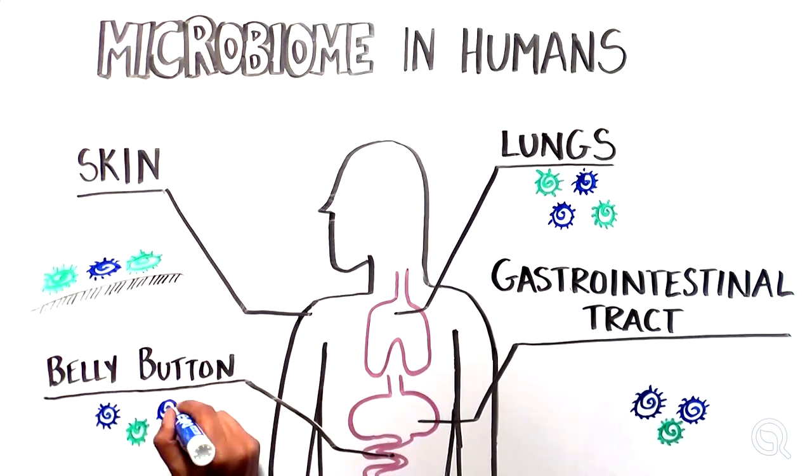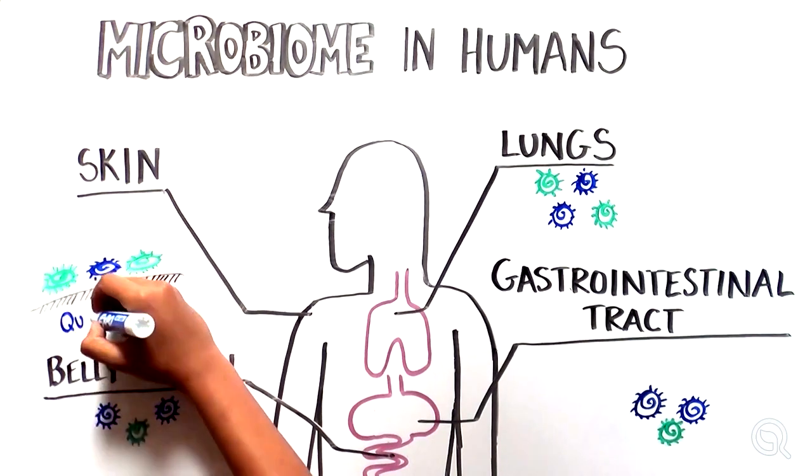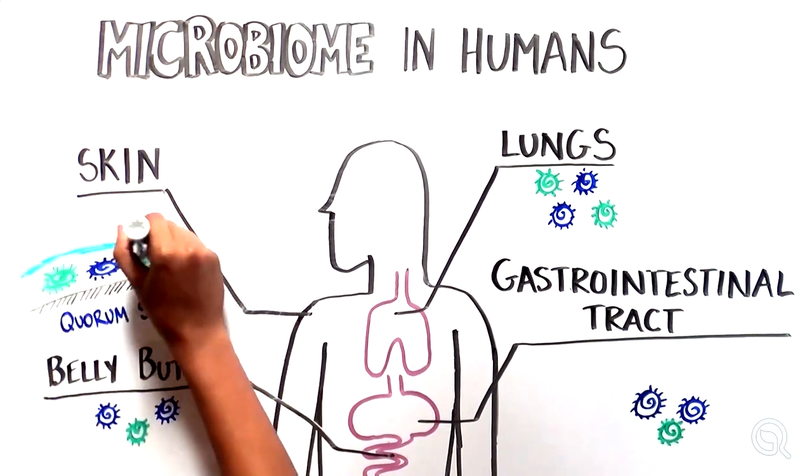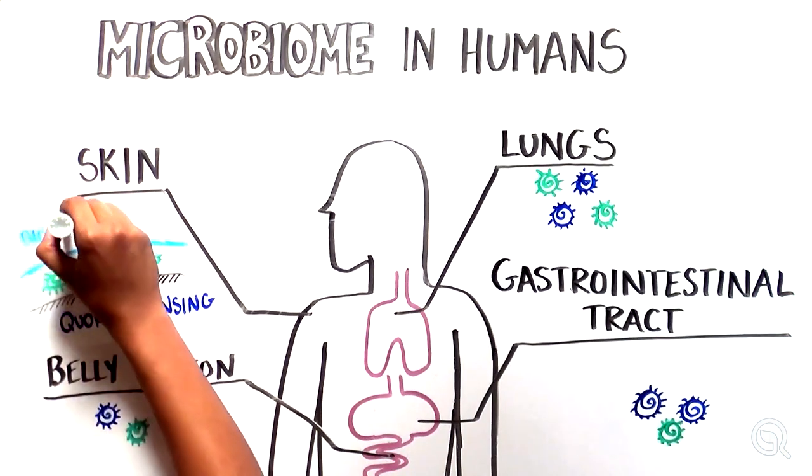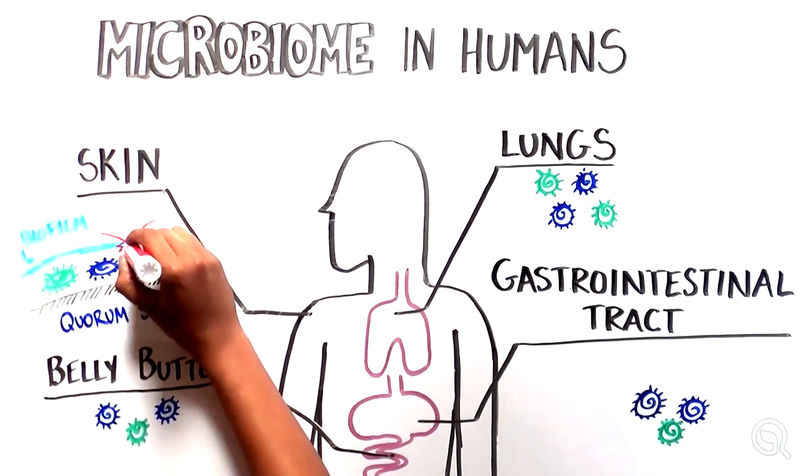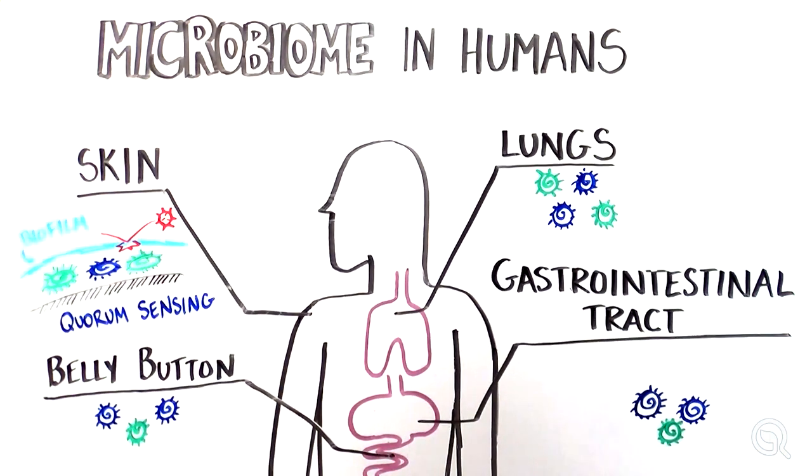Healthy microbiomes are critical because each of these collections of microbes ensures our body functions normally. For example, the bacteria in the skin microbiome use a process called quorum sensing to communicate with each other and form a biofilm that helps defend us from harmful infections and other skin conditions.